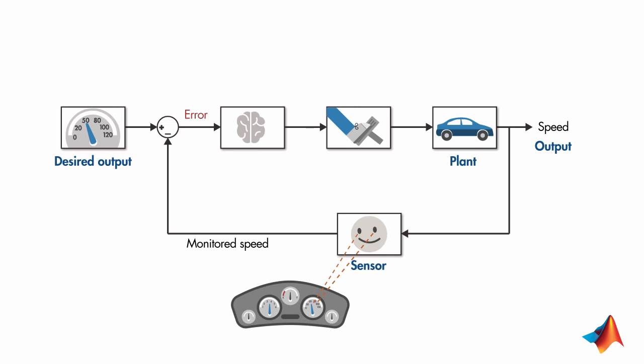The difference between the desired and measured output is the error. Based on the computed error, the controller decides on the control action. And it commands an input which is then sent to the actuator. The actuator is how the controller influences the plant.